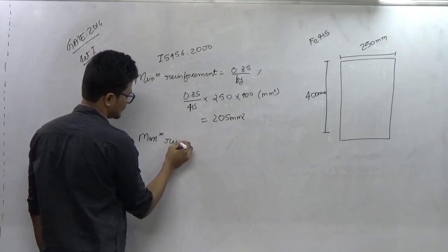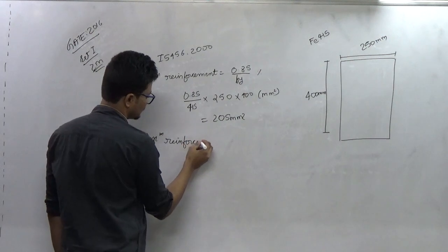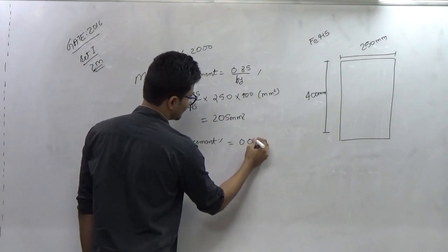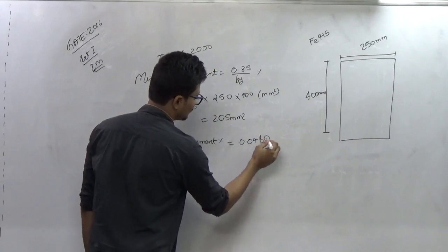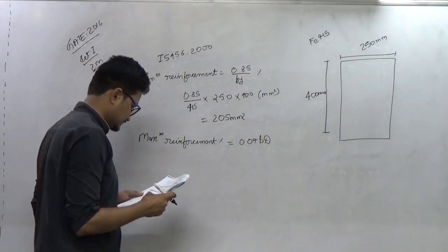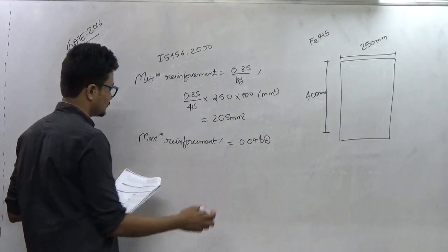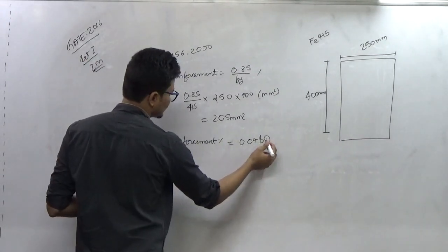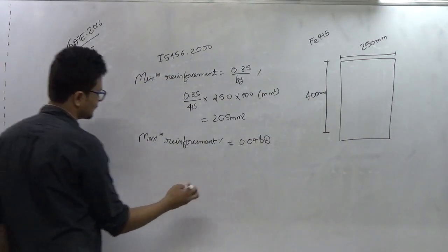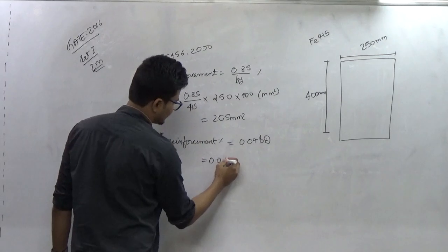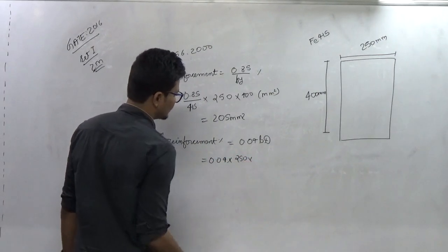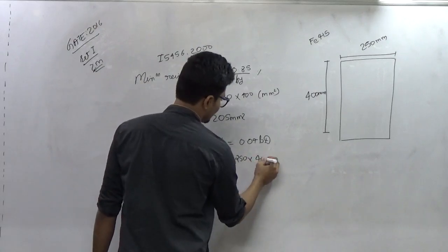Maximum reinforcement percentage is equal to 0.04 times B into capital D. So from here, 4% of the total cross section area will be the maximum reinforcement value. So 0.04 into B is 250 and D is 400.